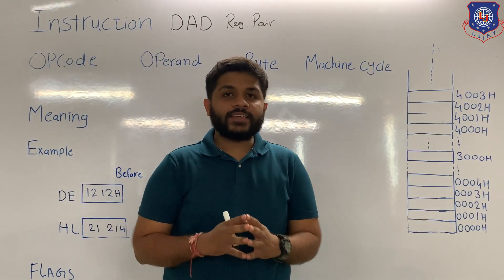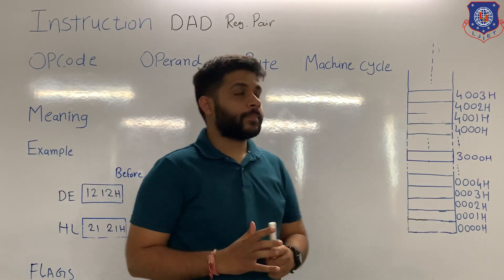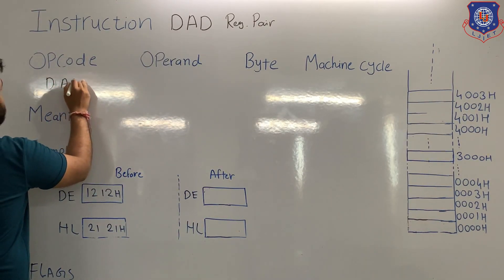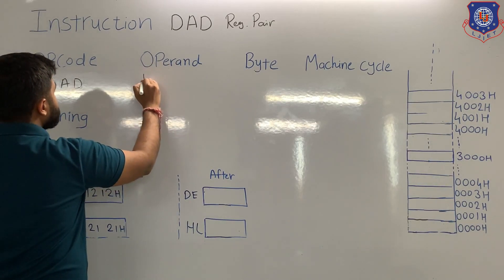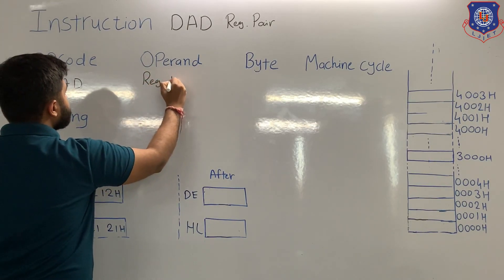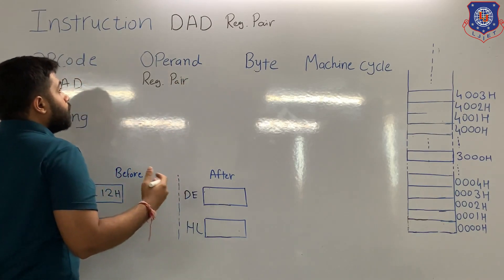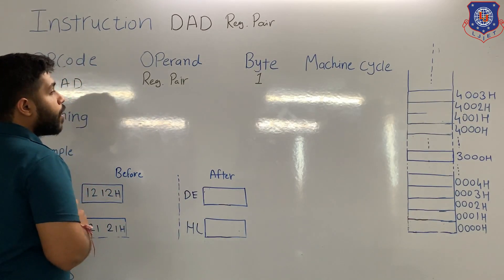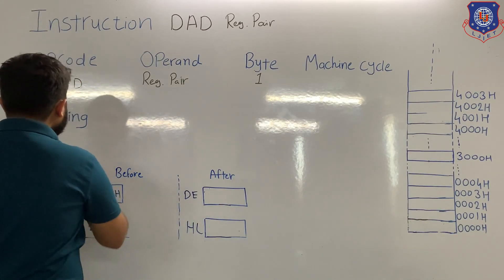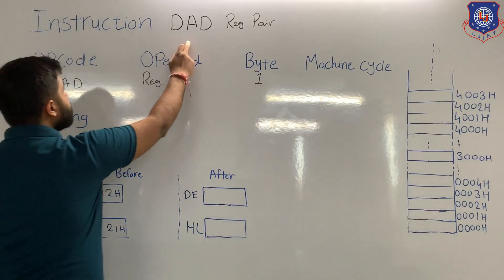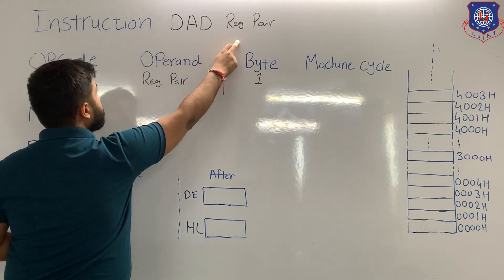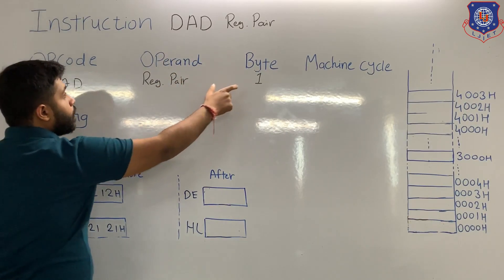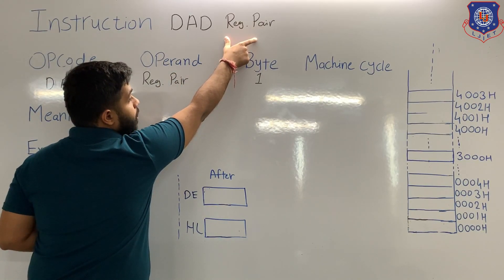Now we are going to see the instruction DAD register pair. For this instruction, the opcode is DAD and the remaining part of the instruction is the operand, that is the register pair. No data is present, which means this instruction is of 1 byte. DAD register pair means 16-bit addition of register pair and HL pair.